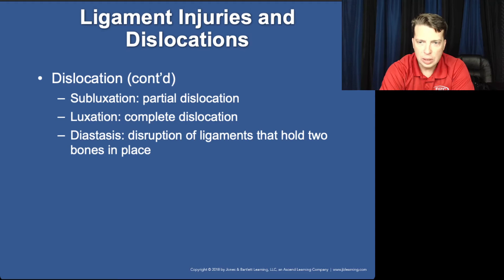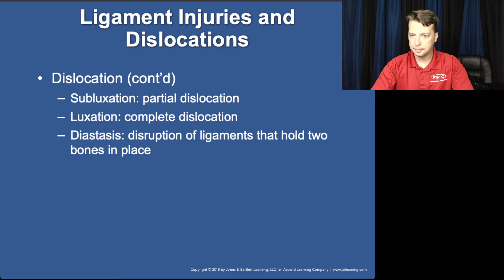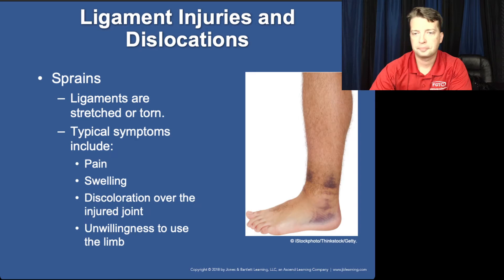Let's talk about dislocations. Subluxations are partial dislocations — where the bones are just slightly out of position. Luxation is a complete dislocation — this is where we would see gross deformity to that joint. If you've ever been to a chiropractor, you've probably heard the word subluxation. Diastasis is where your ligaments have been damaged as a result of the luxation or subluxation.